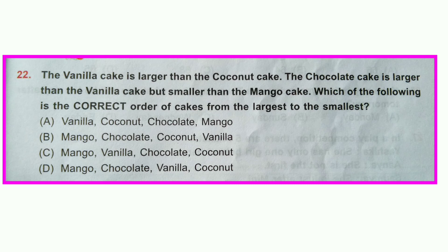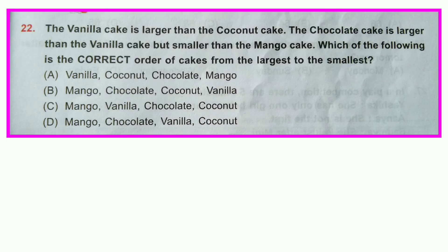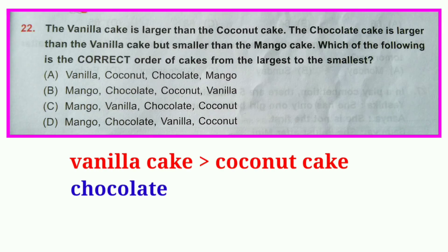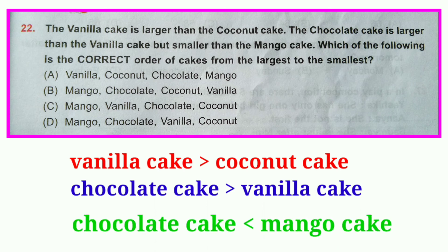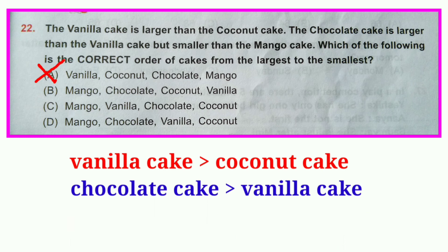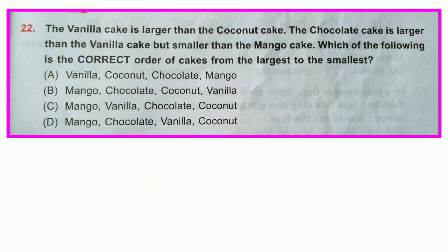Question number twenty-two: The vanilla cake is larger than the coconut cake. The chocolate cake is larger than vanilla cake but smaller than mango cake. Which is the correct order from largest to smallest? Chocolate cake is largest among three, but mango cake is larger than chocolate — so mango cake is the largest of all. Option D is correct.